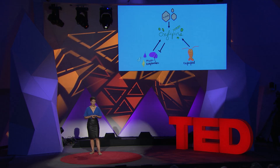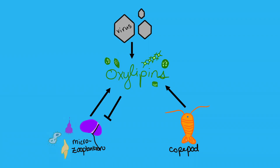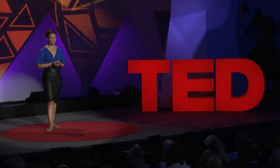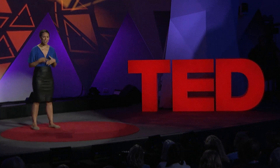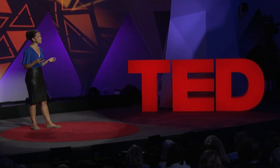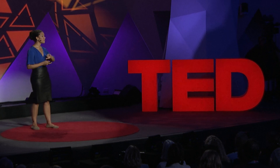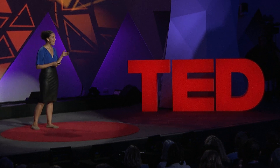Copepods, on the other hand, are not quite as discerning. But there are consequences for this — oxylipins cause mutations in the offspring of copepods and can actually kill up to 70 percent of their eggs. So you can see that this type of chemical signaling might keep the predator population at bay from year to year.